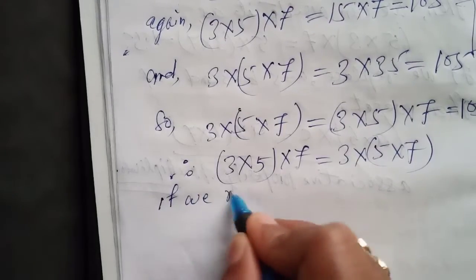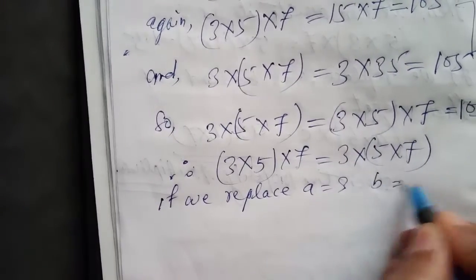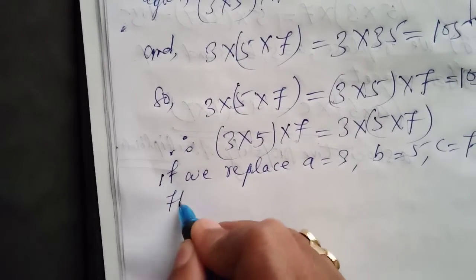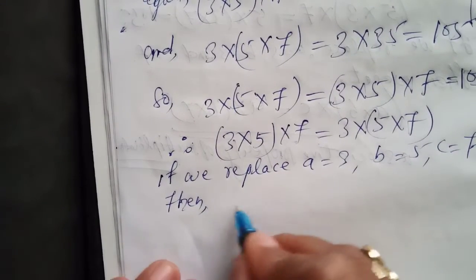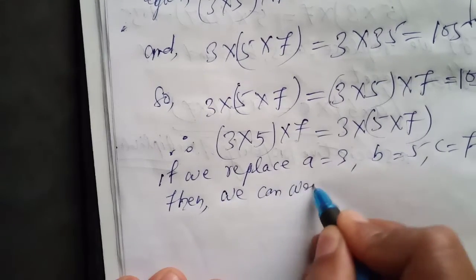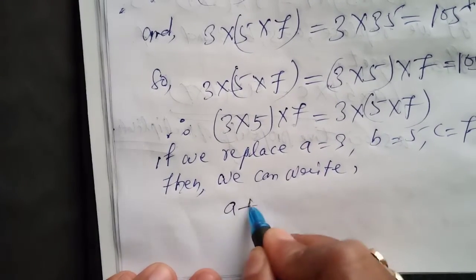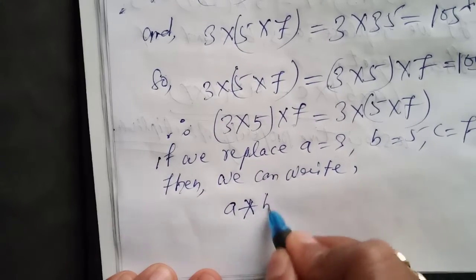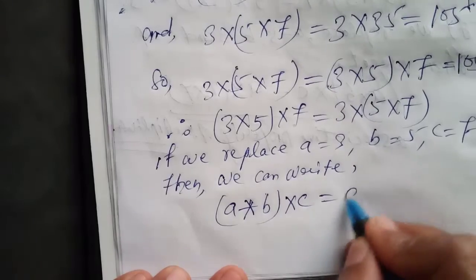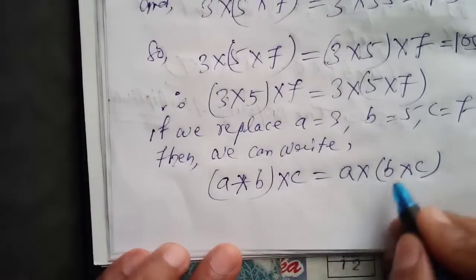If we replace a equal to 3, b equal to 5, and c equal to 7, then we can write (a times b) times c equals a times (b times c).